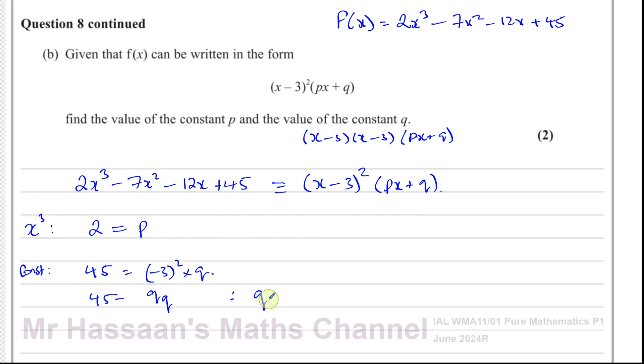That's going to be 45 equals 9q. Therefore we can say q is going to be equal to 45 over 9, which is 5. So we have p equals 2 and q equals 5. So there's the answer to part B of this question. You end up with f(x) equals (x - 3)²(2x + 5). That's how the expression can be written.